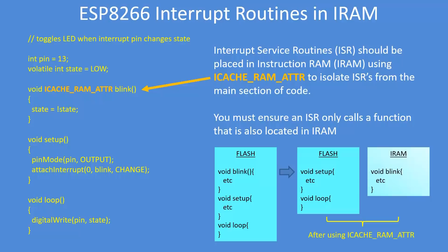The next thing you need to do is make sure you place the interrupt service routine into a different section of storage. In this case the recommended area is the instruction RAM, IRAM, and you do that by prefixing your interrupt service routine with the ICACHE_RAM_ATTR. In the bottom right hand corner there are three blocks: the first block is without using the attribute, so blink is included in flash memory, and then after using the ICACHE_RAM_ATTR, most of the program remains in flash but the function you directed — in this case blink — gets transferred over into instruction RAM, which again makes it more reliable.